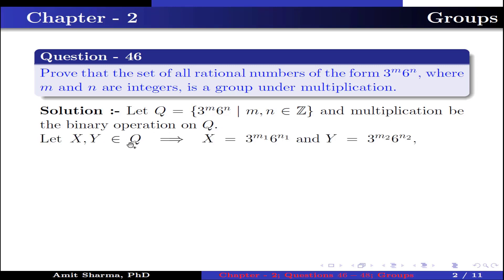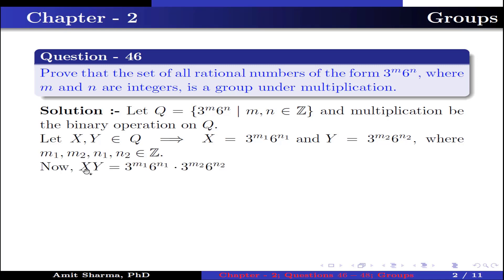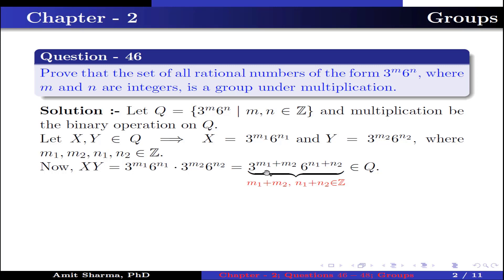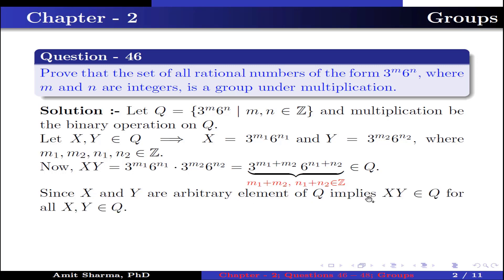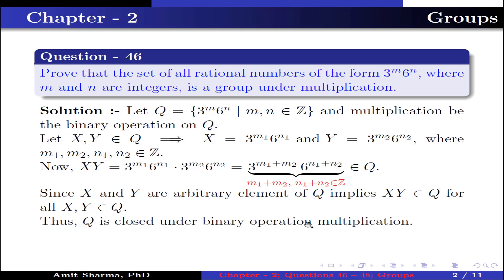Let x, y belong to Q. This implies x = 3^m1 · 6^n1 and y = 3^m2 · 6^n2, where m1, m2, n1, n2 belong to Z. Now x · y = 3^m1 · 6^n1 · 3^m2 · 6^n2 = 3^(m1+m2) · 6^(n1+n2), which belongs to Q because it is of the type 3^m · 6^n and m1+m2, n1+n2 belong to Z. Since x and y are arbitrary elements of Q, x·y belongs to Q for all x, y in Q. Thus Q is closed under multiplication.